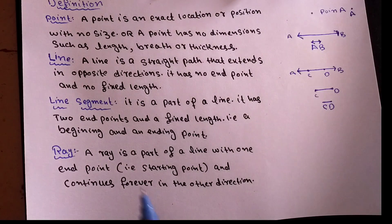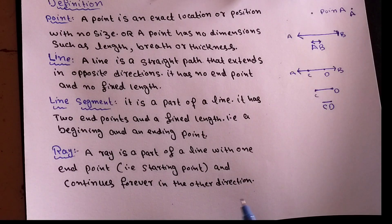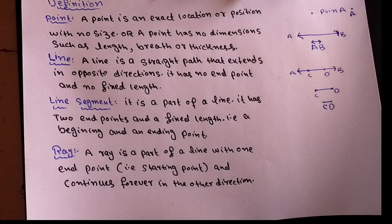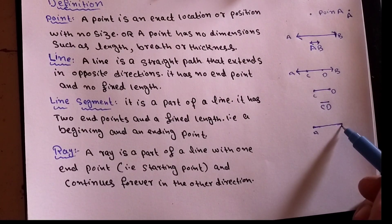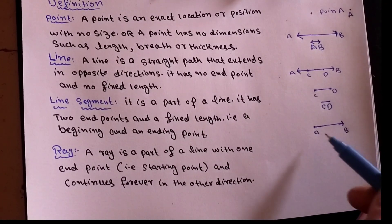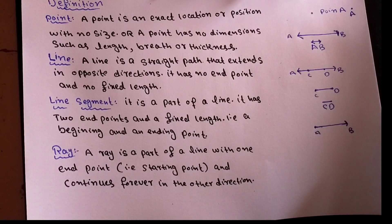The next concept is a ray. A ray is a part of a line with one endpoint. It starts at one point and continues forever in the other direction. On one side it has a fixed starting point, and on the other side there is an arrow sign, meaning it extends infinitely in that direction. So a ray has one starting point and extends infinitely in one direction.